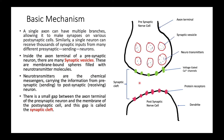There is a small gap between the pre-synaptic neuron and the post-synaptic neuron, which is known as the synaptic cleft. The dendrite of the post-synaptic neuron has green spots, which are voltage-gated calcium channels, and pink spots, which are protein receptors.